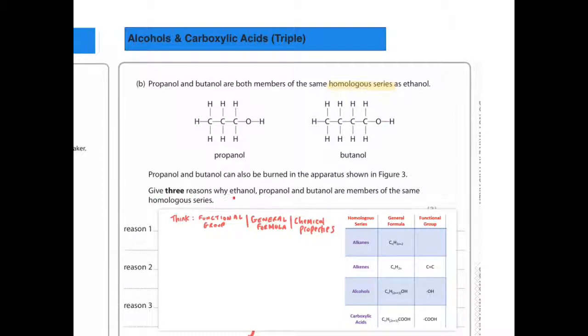Give three reasons why ethanol, propanol and butanol are members of the same homologous series. So when you need to justify why things are members of the same homologous series, think three things: functional group, general formula and chemical properties. For example, a general formula would be something like in alkenes CnH2n. So that means whatever number of carbon atoms you have, you have double the amount of hydrogen atoms.